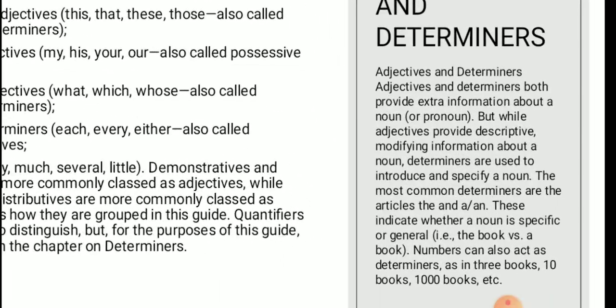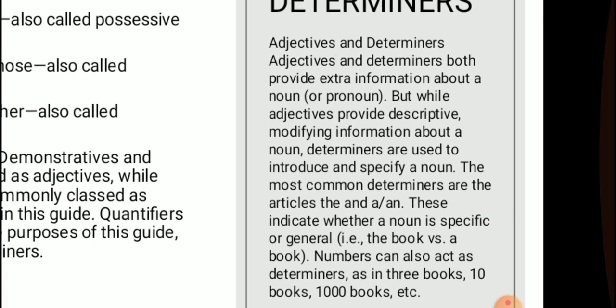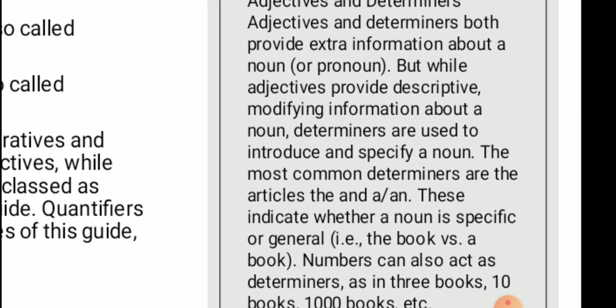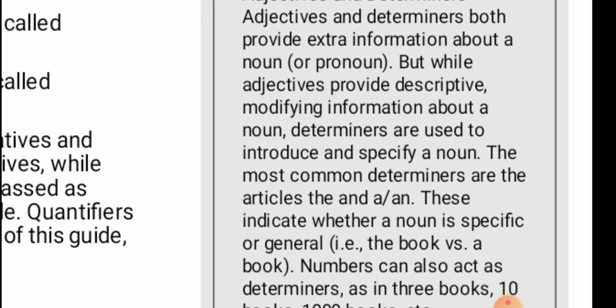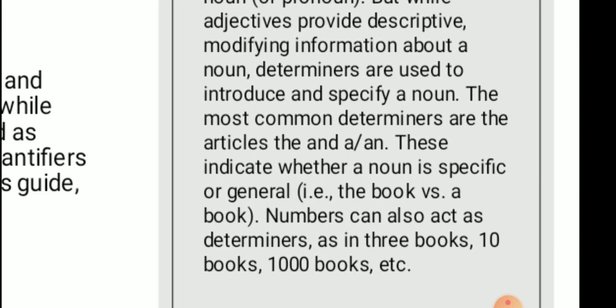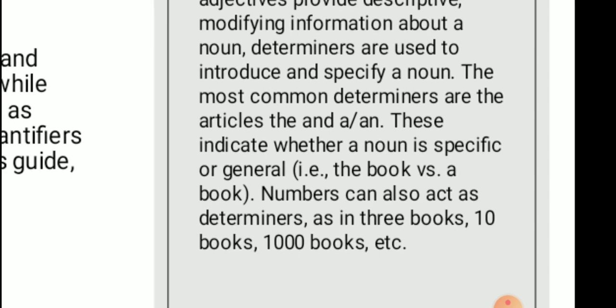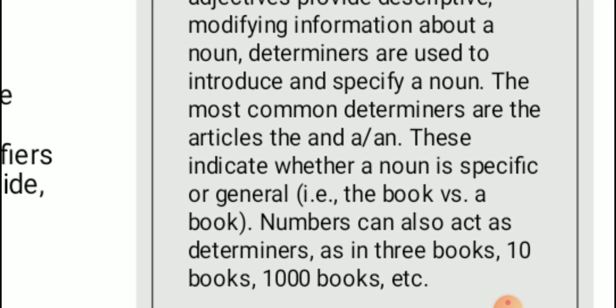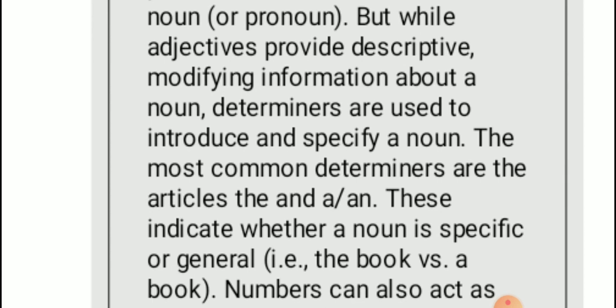The next slide discusses adjectives and determinants — the difference between the two. Both are used to provide extra information about a noun or pronoun. Adjectives provide descriptive, modifying information about a noun, while determinants are used to introduce and specify a noun. The most common determinants are the articles. Determinants indicate whether a noun is specific or general — for example, 'the book' is specific, while 'a book' is general.